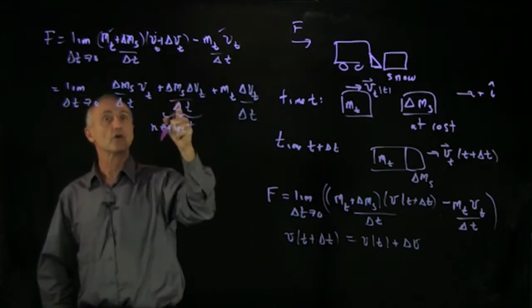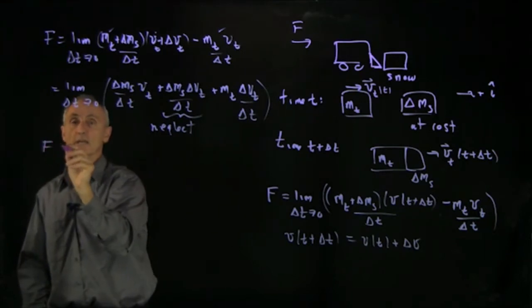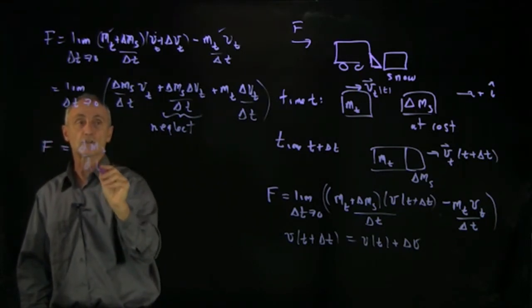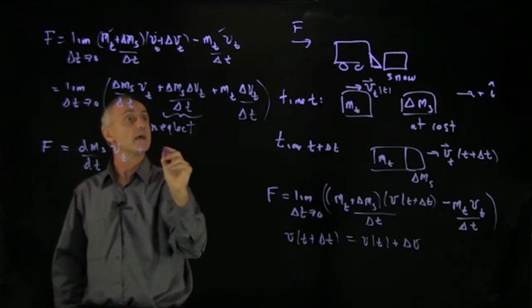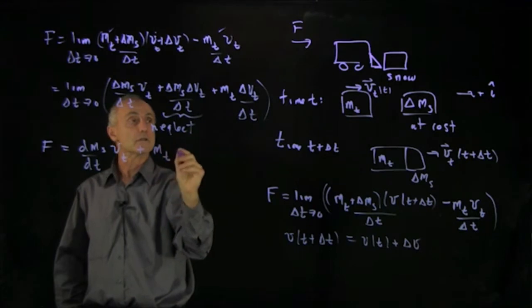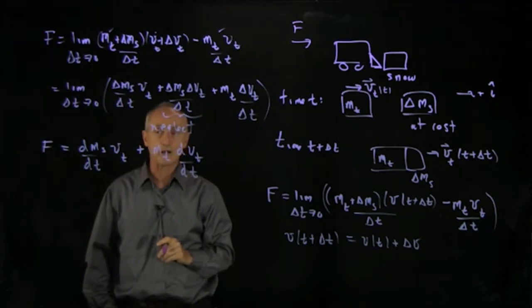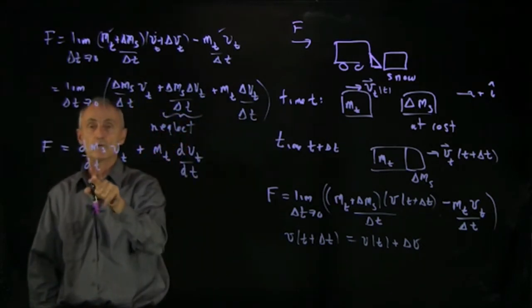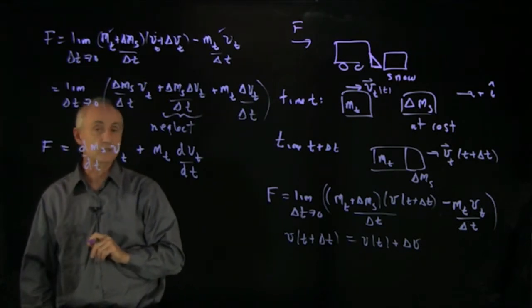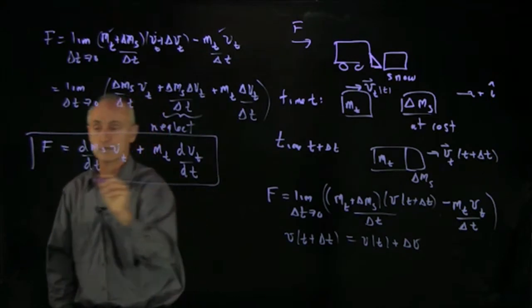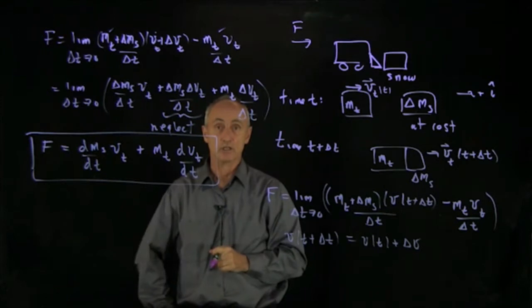So neglecting this second order term in differentials, what we get when we take the limit is that we get the force is dms dt, the rate that the snow is being picked up, times v of the truck plus mass of the truck times dv truck dt. Now, the only issue that we have to think about here is about the rate that the truck, the snow, is being picked up. So that's our last consideration. But this will be our differential equation for adding mass continually to a system.